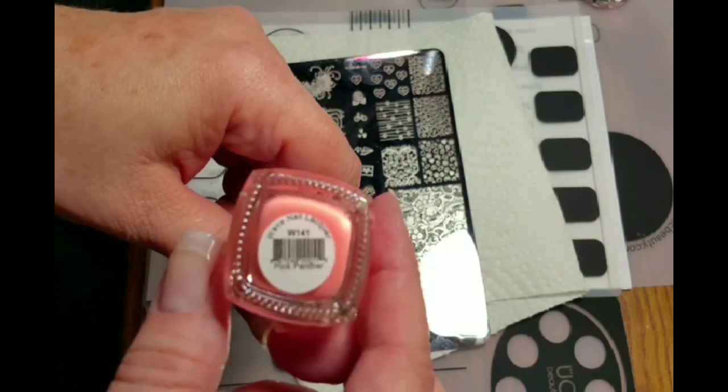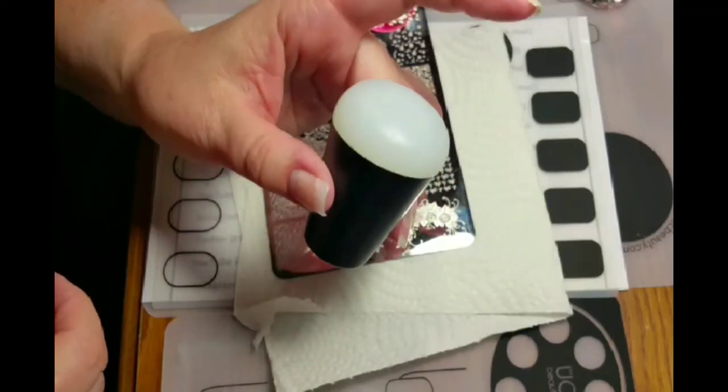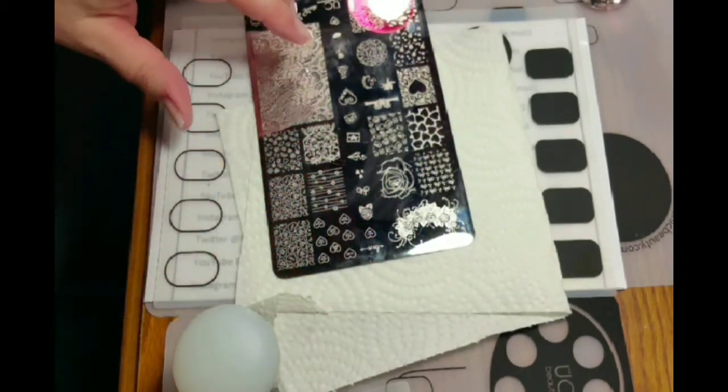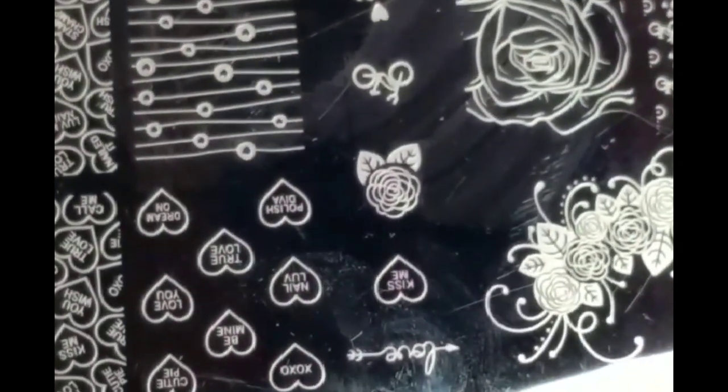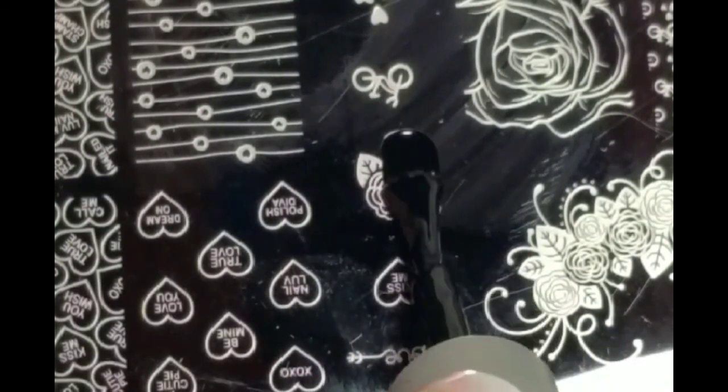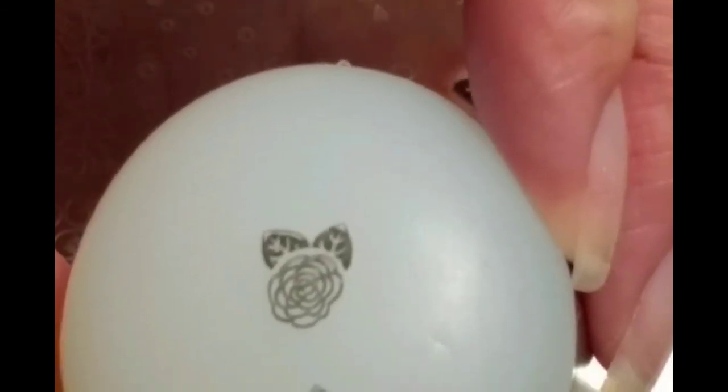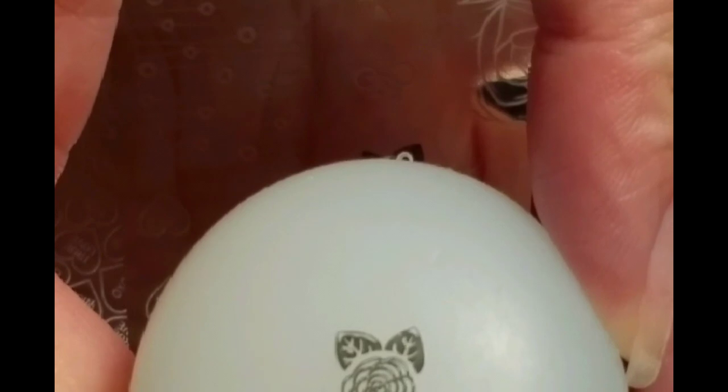So the first one we'll use right now is called Pink Panther. And I'm going to use my Uber Chic Beauty Sticky Stamper and Scraper. And first we're just going to create the flowers. So now I'm just going to remove the parts of the image that I don't need.